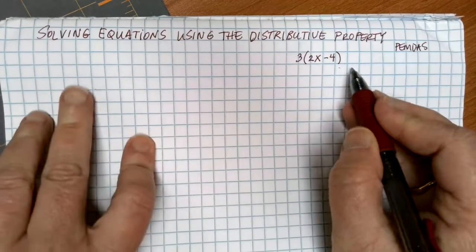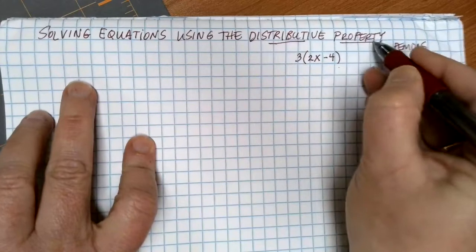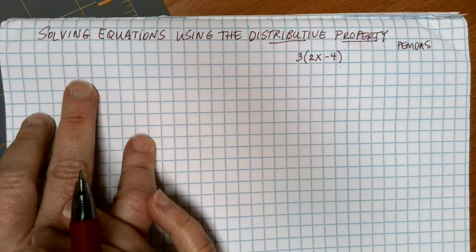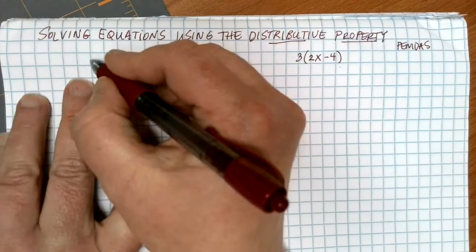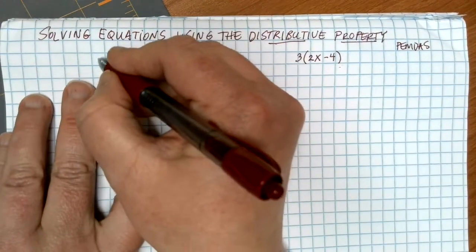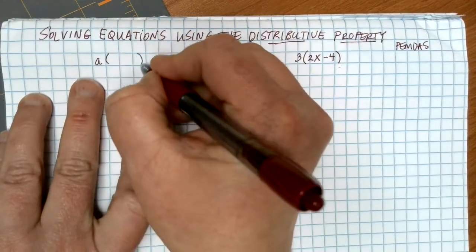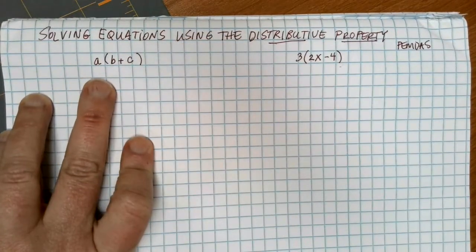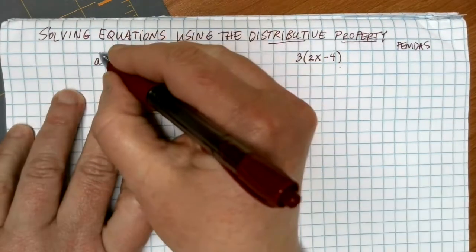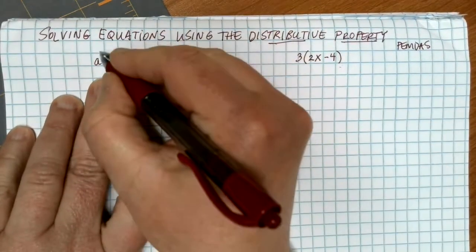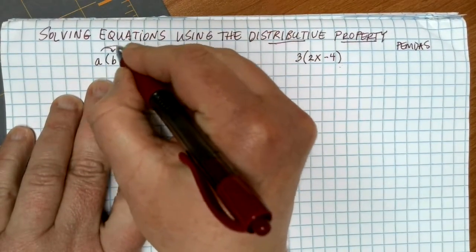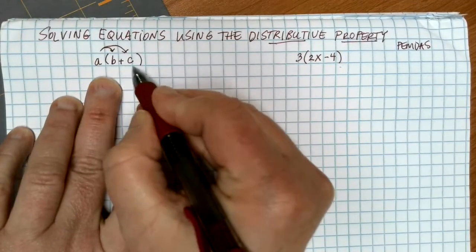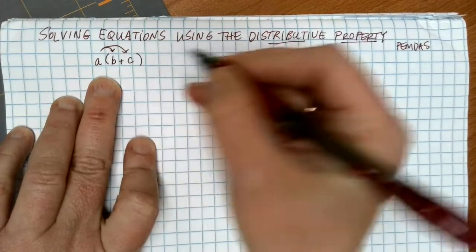In order to do that, we can use a special math property called the distributive property. It's a property that goes along with multiplication and addition. If you have some number being multiplied outside the parentheses with something being added or subtracted inside, we can get rid of the parentheses by taking whatever is outside and multiplying it by each thing that's inside. We're distributing the a into both of the things inside — that's where the name comes from.